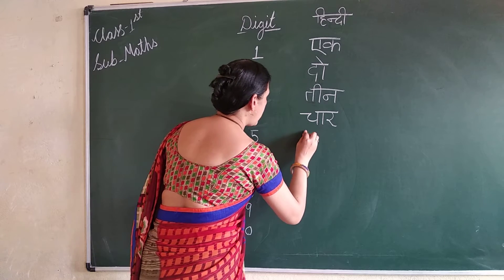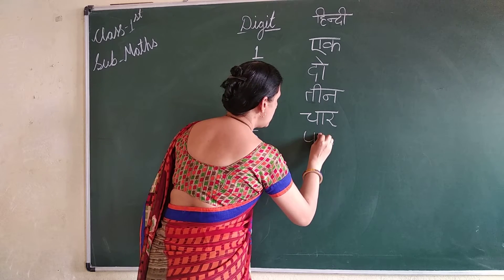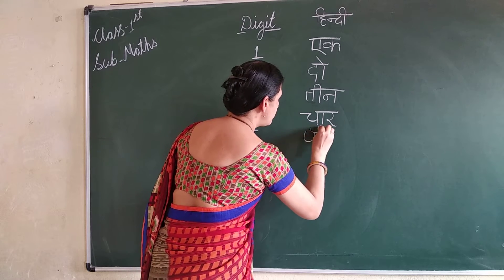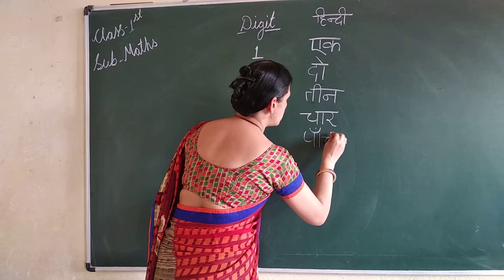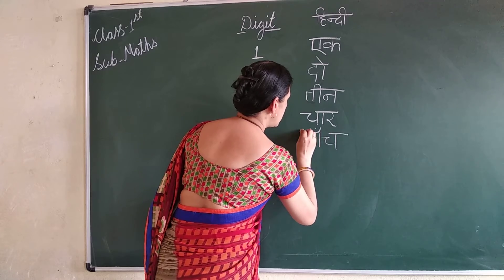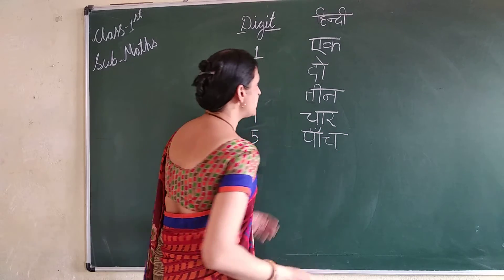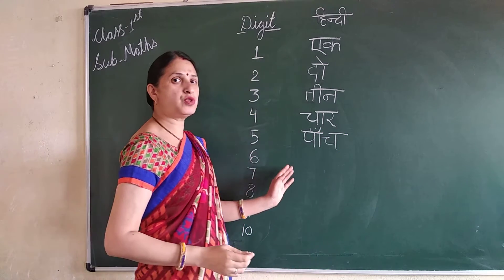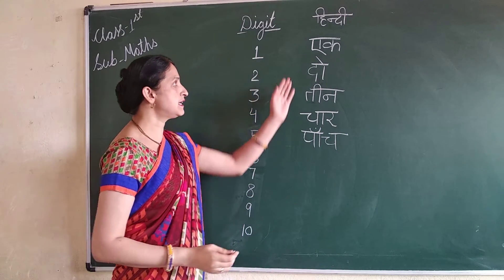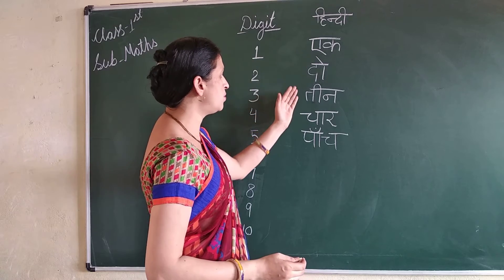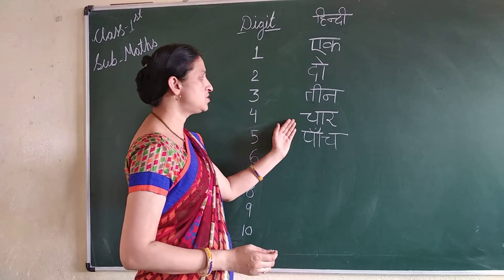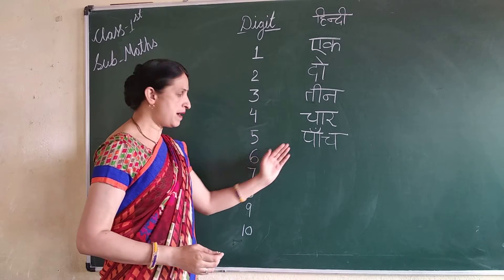Five. Five. How do we call five in Hindi? Five. How do we call these in Hindi? One. Two. Three. Four. Five.